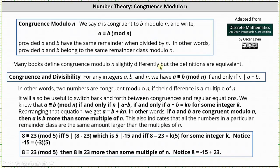And now let's give a formal definition of congruence modulo n. We say a is congruent to b modulo n and write a is congruent to b mod n provided a and b have the same remainder when divided by n. In other words, provided a and b belong to the same remainder class modulo n.